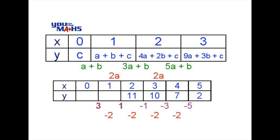We need to remind ourselves how we use the first differences to find missing y values. If we go to the extreme right of the table, 2 minus 7 in the y row gives a first difference of negative 5. To achieve a first difference of 1, the missing value to the left of 11 must be 10, because 11 minus 10 is 1. And the value to the left of 10 must be 7, because 10 minus 7 gives a first difference of 3. Now we match algebraic expressions from the top table to numerical values in the bottom table. We can see that the constant c matches 7, the first difference a plus b matches a value of 3, and the second difference 2a matches negative 2.